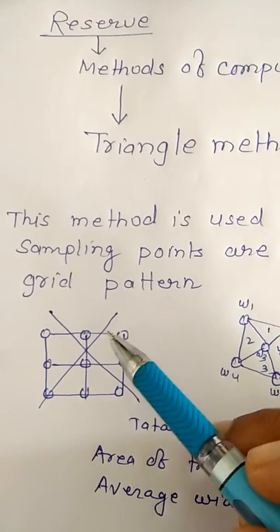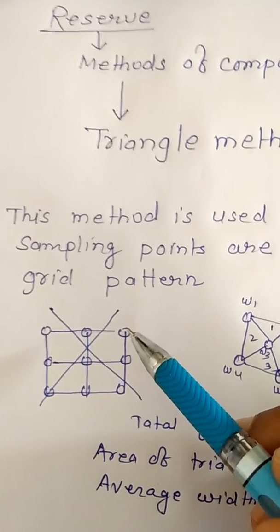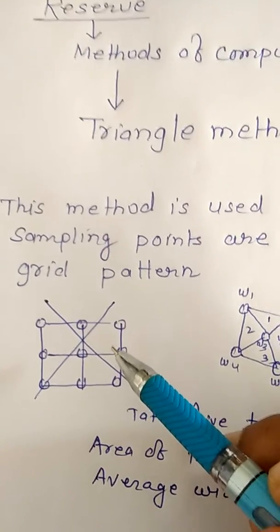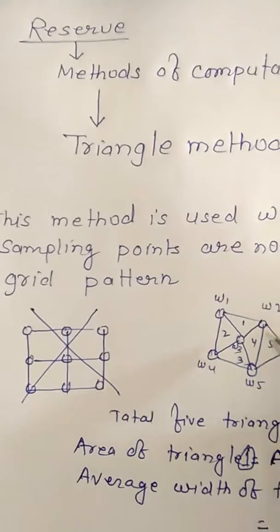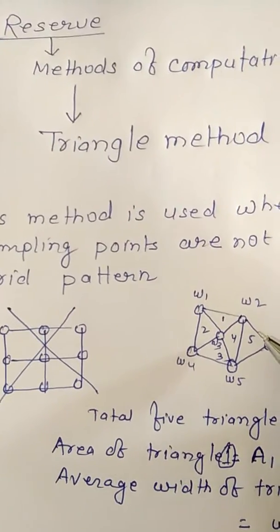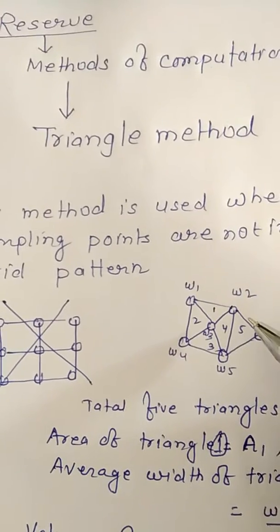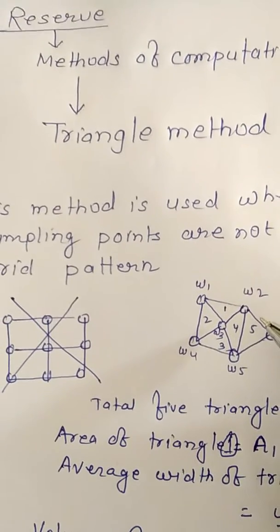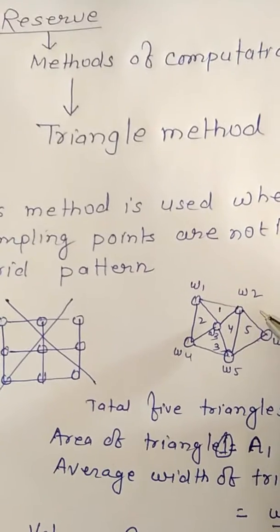Grid pattern means the interval between two boreholes or sampling points is constant. But in the triangle method, samples are not on grid patterns — these sample points vary from one location to another location.